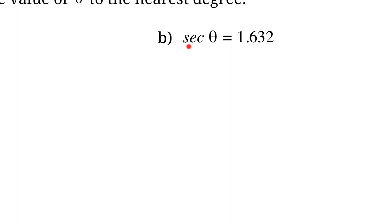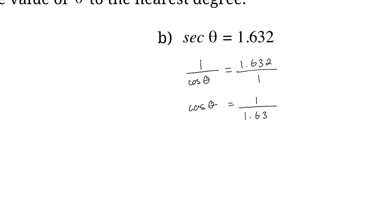The next question gives secant θ = 1.652. Secant is the reciprocal of cosine, so cosine θ = 1 over 1.652. Since we're finding angle θ, we use the inverse cosine button. Putting that into the calculator gives θ ≈ 52.21 degrees.